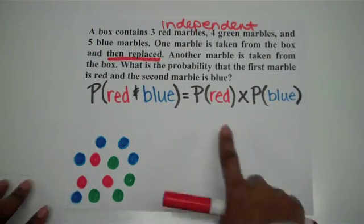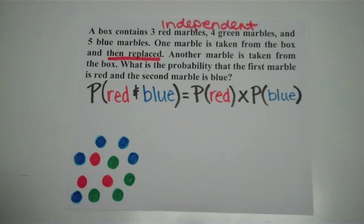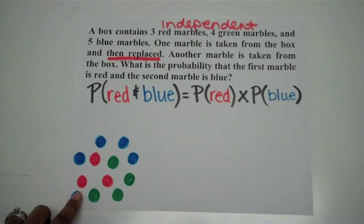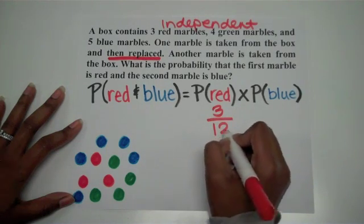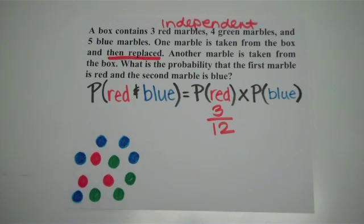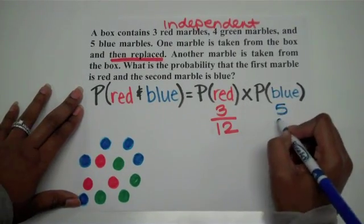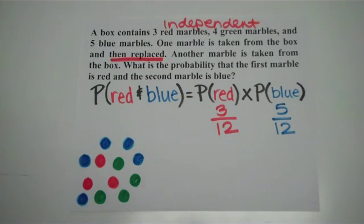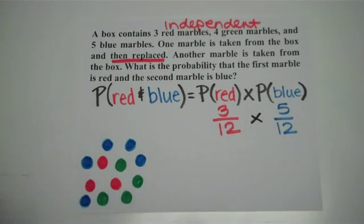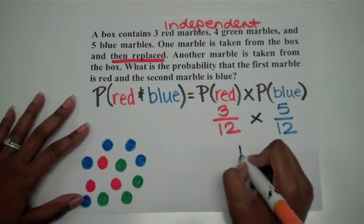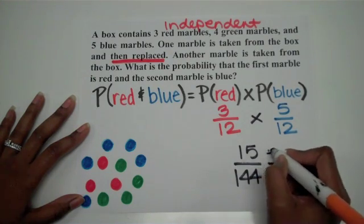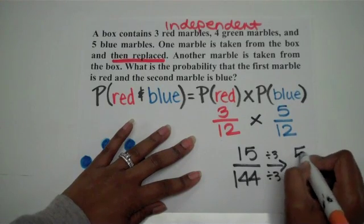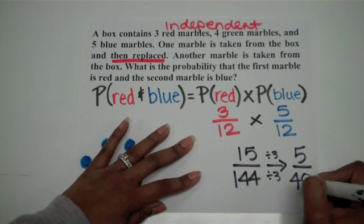All we need to do is find the probability of pulling a red marble and multiply it by the probability of pulling a blue marble. From simple events, we find our number of favorable outcomes over our number of possible outcomes. So I've got three red marbles out of a total of twelve possible marbles — probability of drawing red is three out of twelve. Probability of getting a blue marble is five out of twelve. Multiplying straight across: three times five is fifteen, twelve times twelve is one hundred forty-four. Simplifying by dividing by three, the probability of getting a red and a blue is five out of forty-eight.